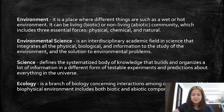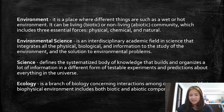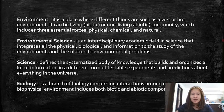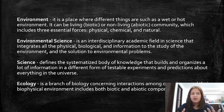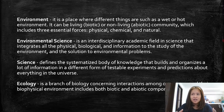The environment is a place where different things exist — such as a wet or hot environment. It can be living, which is biotic, and non-living, which is abiotic — a community that includes three essential forces: physical, chemical, and natural. Environment is also defined as the condition that surrounds an organism or a group of organisms and creatures. Moreover, the environment includes everything living and non-living, both biotic and abiotic.